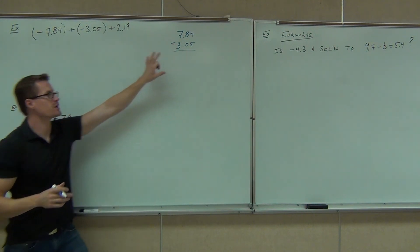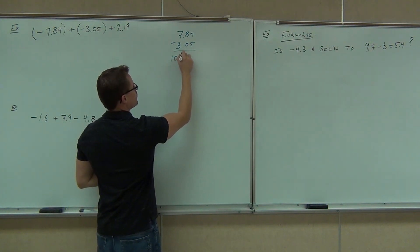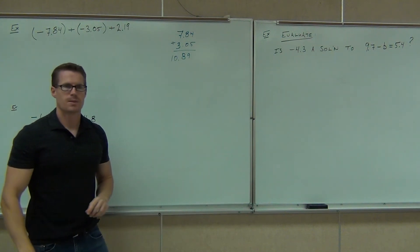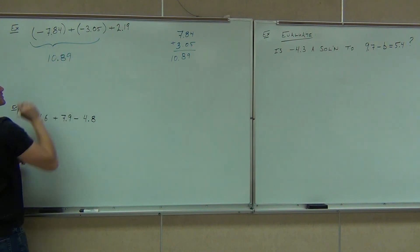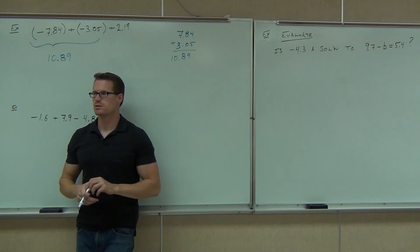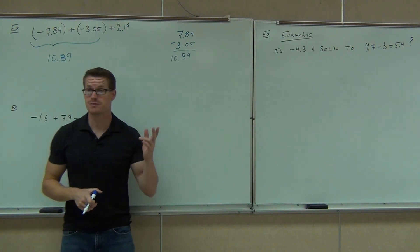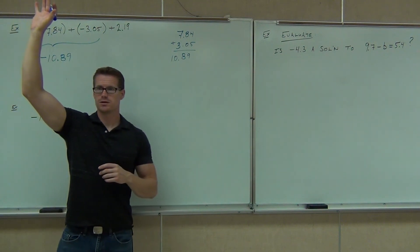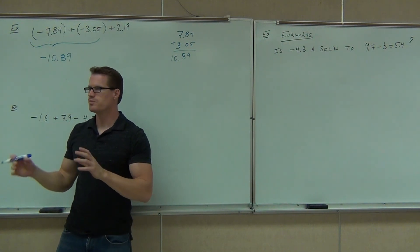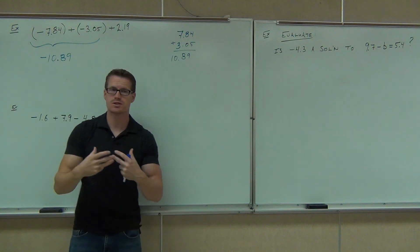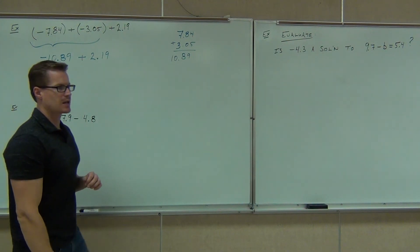The signs don't really matter over here because we're already using the addition rule to take care of those signs for us. So here we'll get 10.89. Addition rule says same sign — add them together, keep the common sign — so we've got to have negative 10.89. Raise your hand if you got that part right. We're not done, because we've got this 2.19 hanging on the end of that thing.